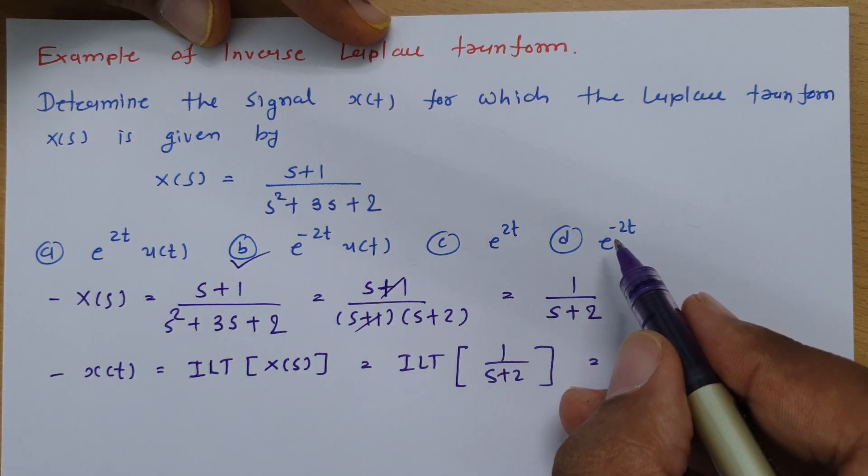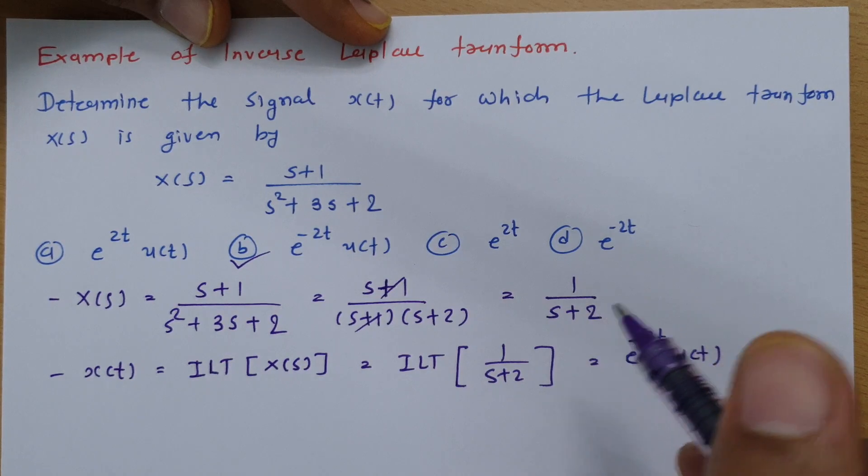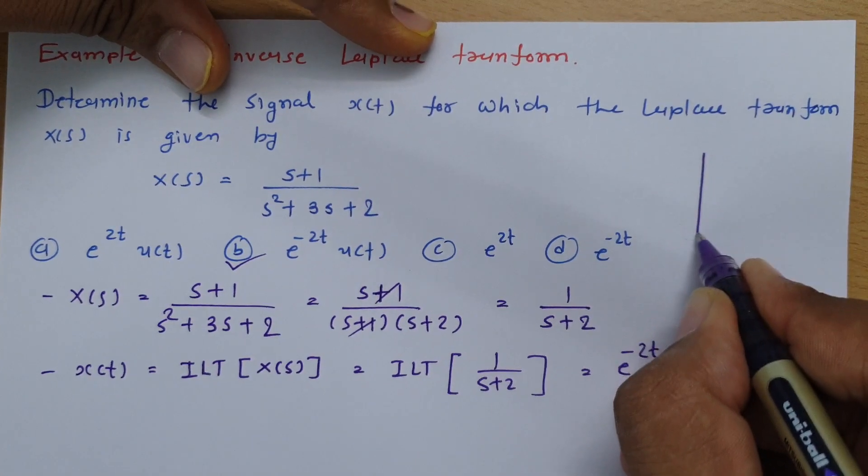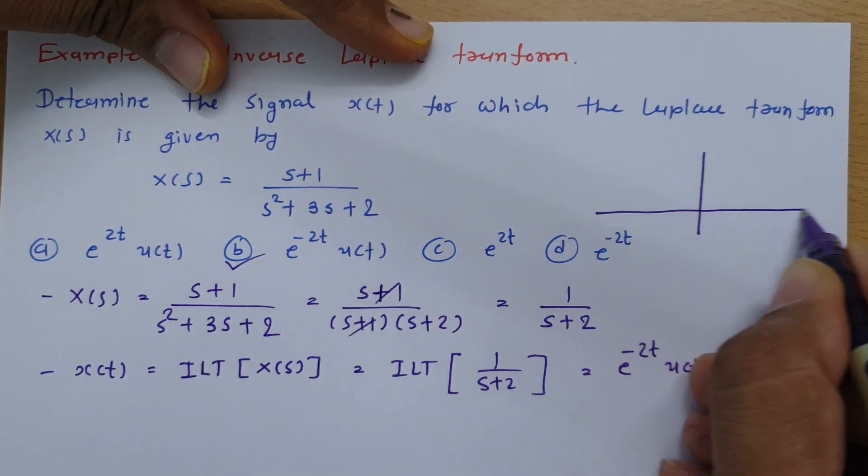Now why shouldn't we write this answer? So if you observe the waveform of e^(-2t)...